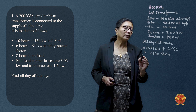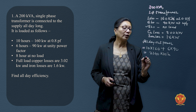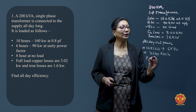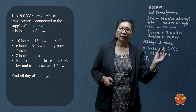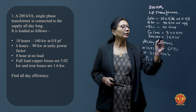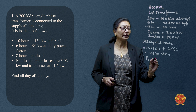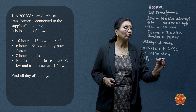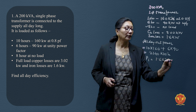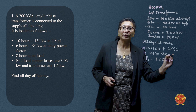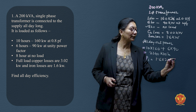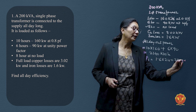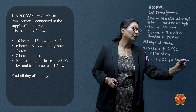Iron losses for 24 hours: since iron losses are constant, we multiply 1.6 kW by 24 hours. This gives us 38.4 kWh for iron losses over the full day.